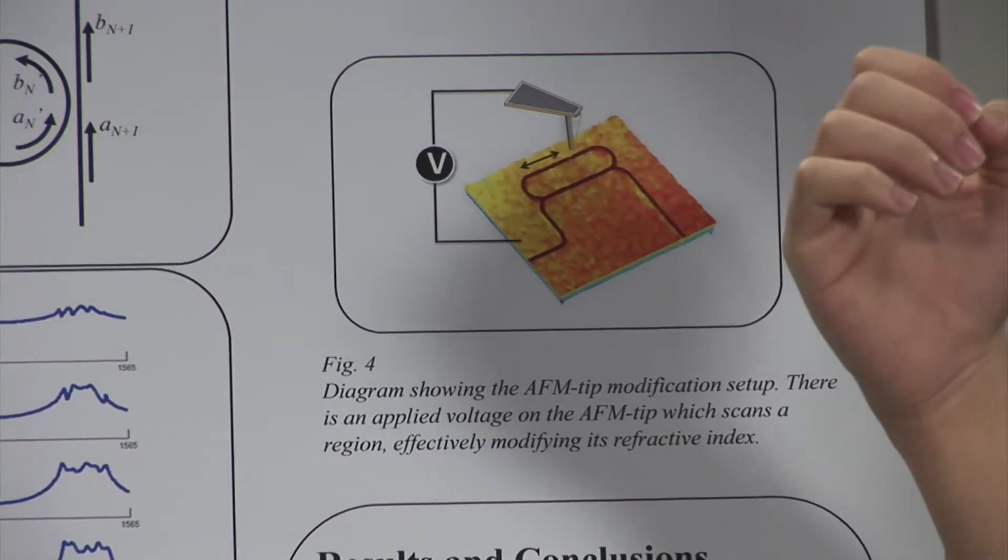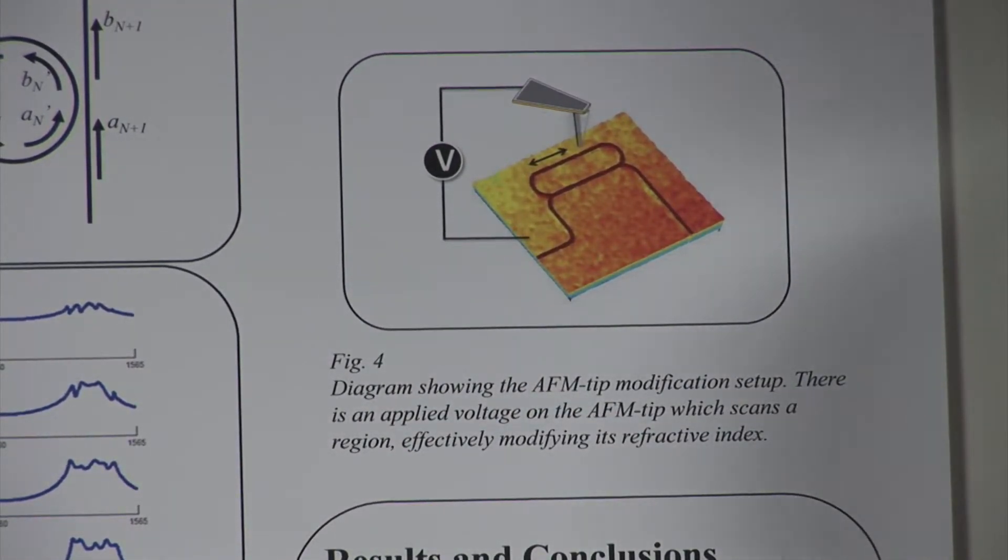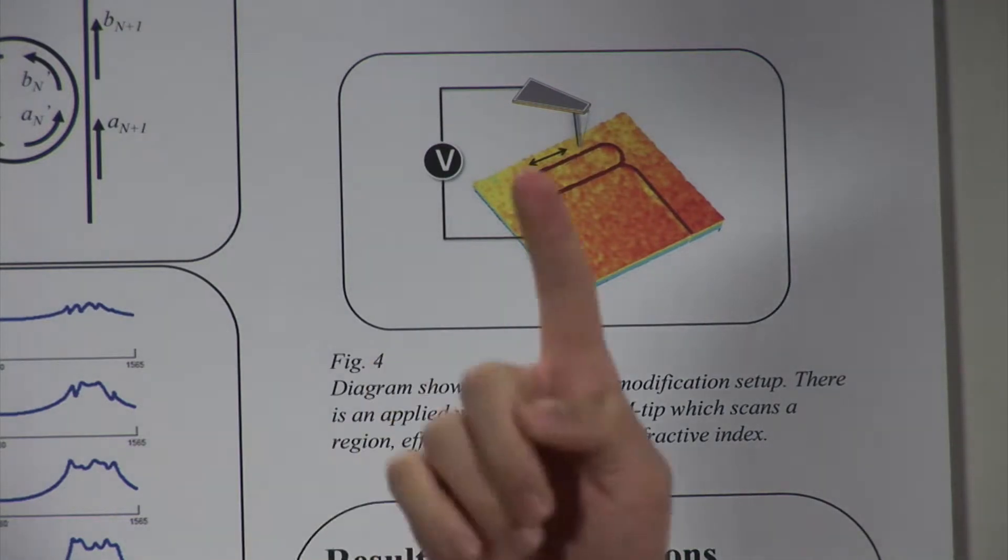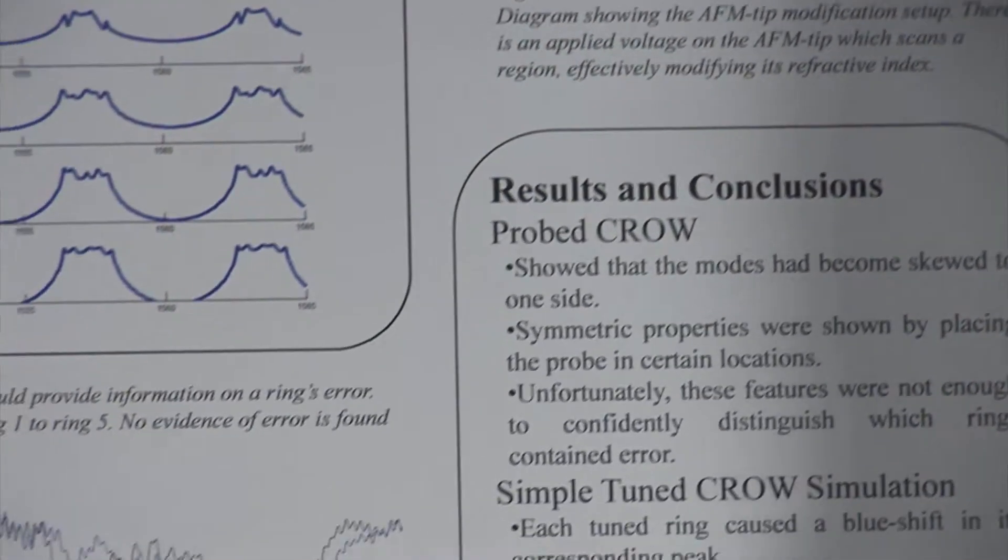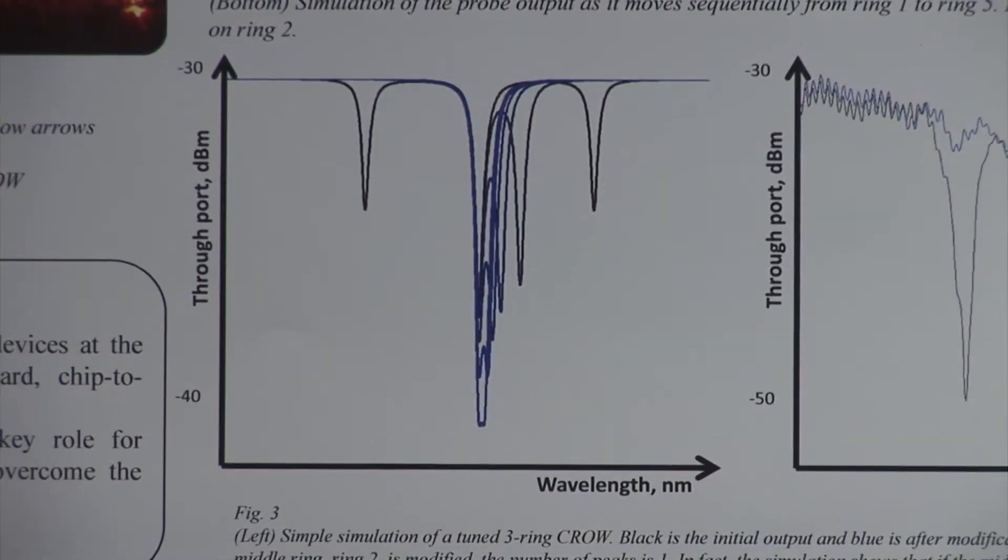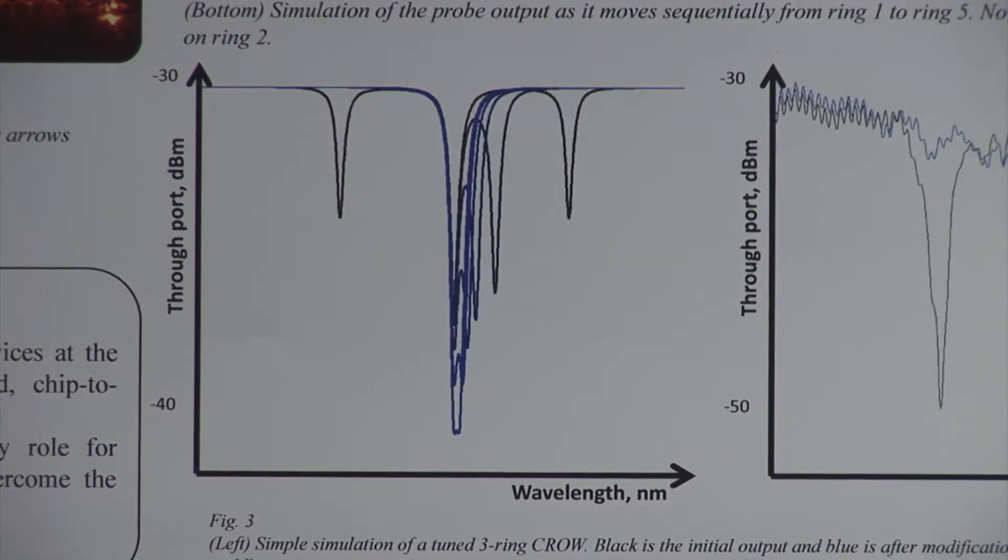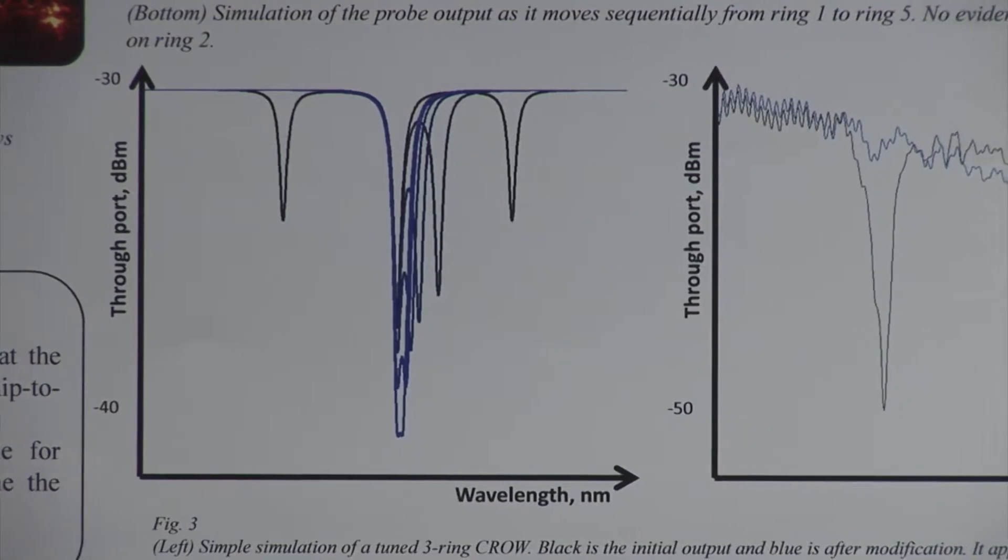And we saw that in a three-ring CROW, we would tune it, and it would change from three peaks in its output to one peak. And indeed, when we did this in the experiment, we saw these results. The three initial peaks it had in the output changed to one peak after tuning. So that's great news. The simulation got the prediction right.